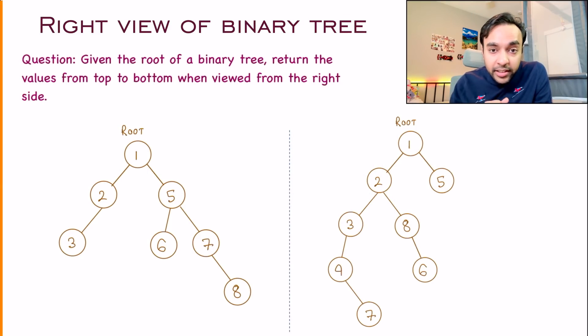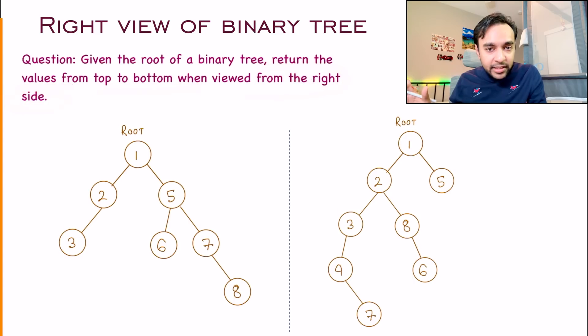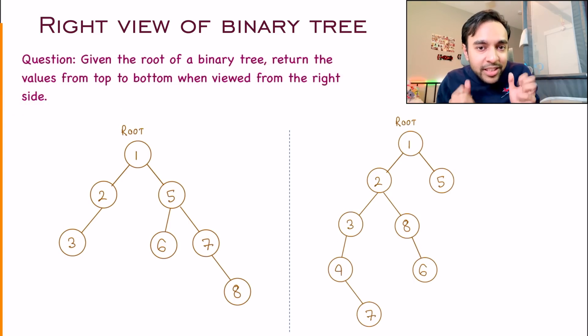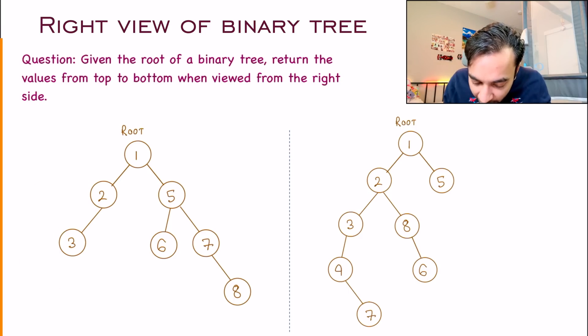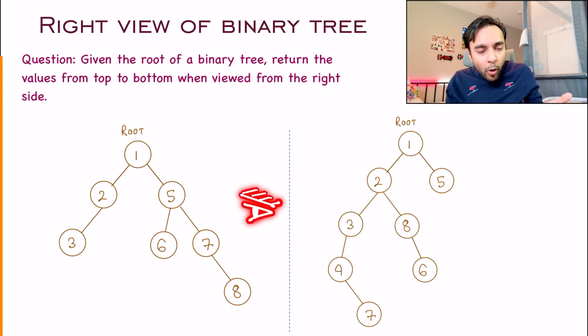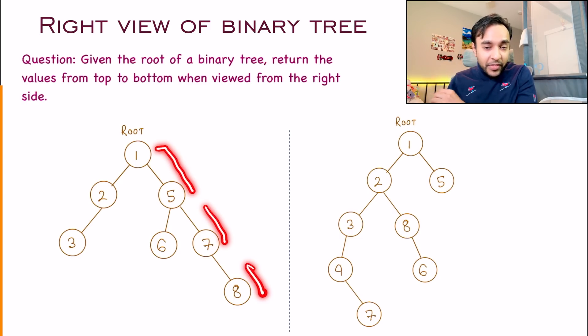First of all, let's make sure that we understand the problem statement correctly. In this problem, you are given the root of a binary tree and you have to return me the values from top to bottom when you are viewing it from the right hand side. So what does this actually mean? Let us say I have this particular binary tree with me. You have to assume that you are looking at this tree from the right hand side. Now what will you see? You see all of these nodes that are on the far most right hand side and you have to return them from top to bottom.